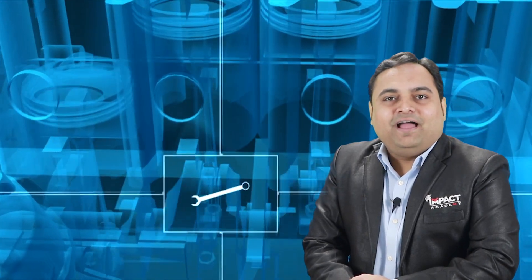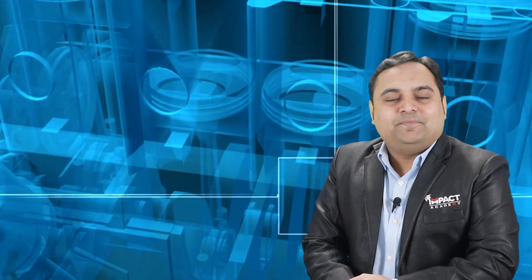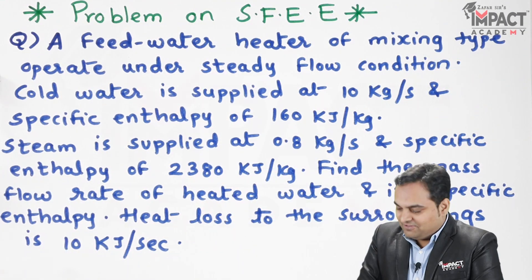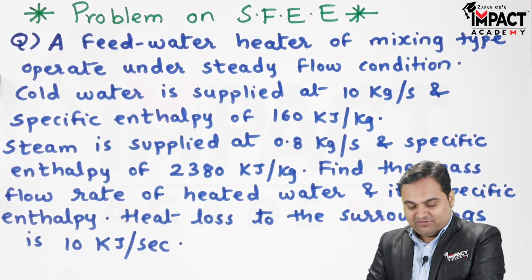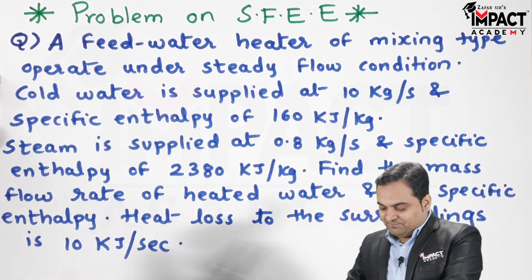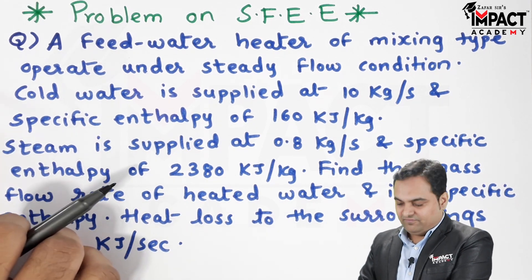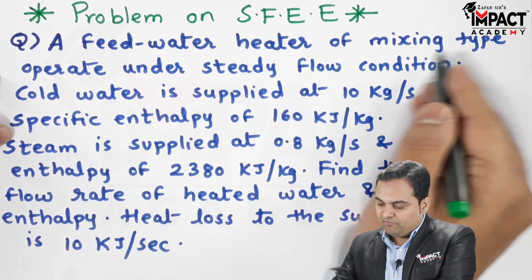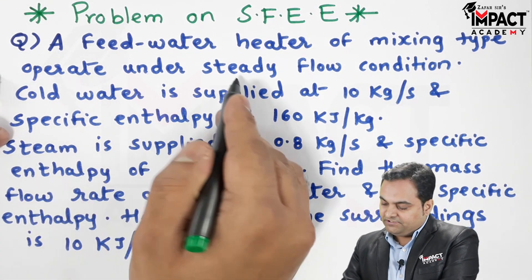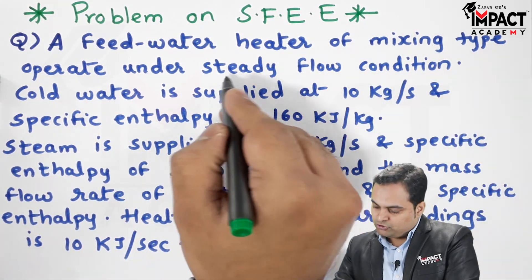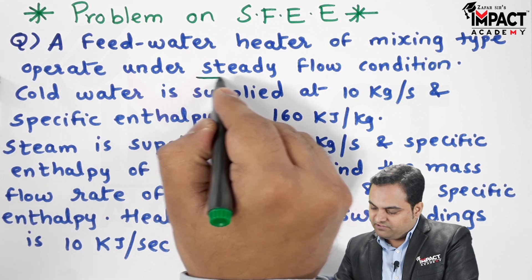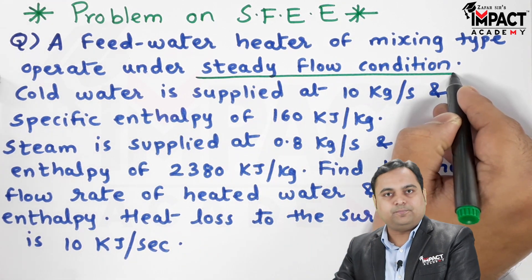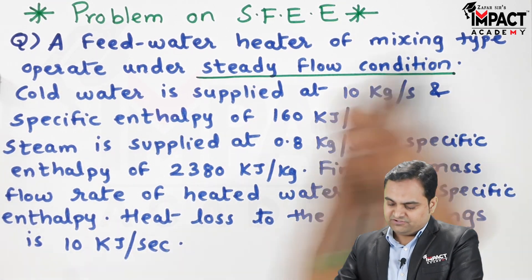Here in this video I will be explaining a problem on SFEE. Here is the question — whatever is given, I'll write that in the form of data first. It is given that a feed water heater of mixing type operates under steady flow condition. Since steady flow condition is given, the problem belongs to an open system.